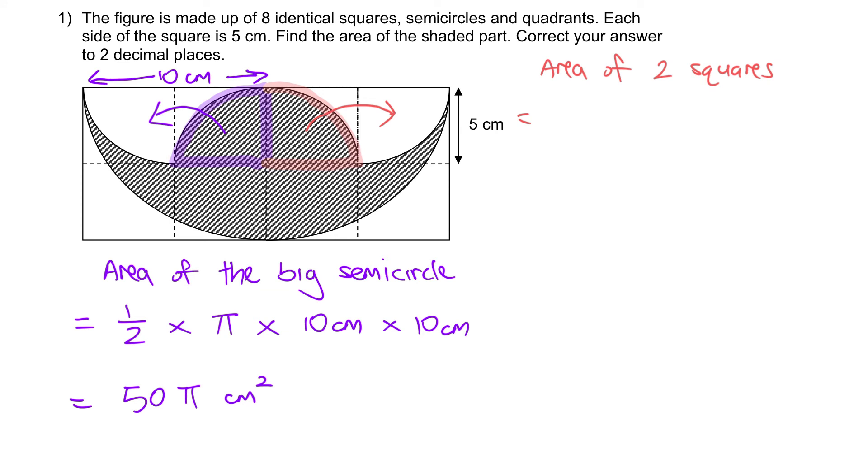Or you can just find the area of this rectangle. It's the same. So I'm just going to find the area of the rectangle, 10 cm times 5 cm. That will give me 50 cm².